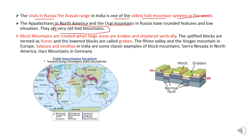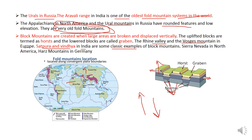Block mountains are created when large areas are broken and displaced vertically. The uplifted blocks are called horsts and the lower blocks are called grabens. The Rhine Valley and the Vosges mountains in Europe, and the Satpura and Vindhya ranges in India, are classical examples of block mountains.